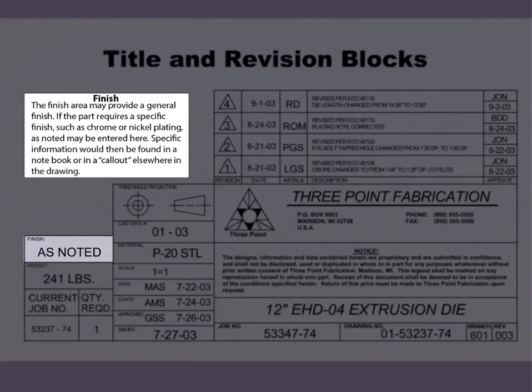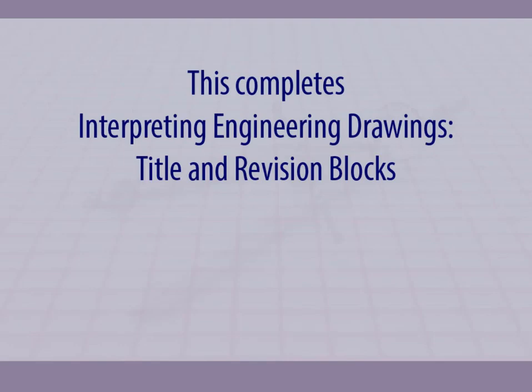Weight: this value may be used for safety issues or shipping weight calculations. If the part requires a specific finish, such as chrome or nickel plating, it may be noted here. Specific information would then be found in a notebook or in a call-out elsewhere in the drawing. This completes interpreting engineering drawings: title and revision blocks.